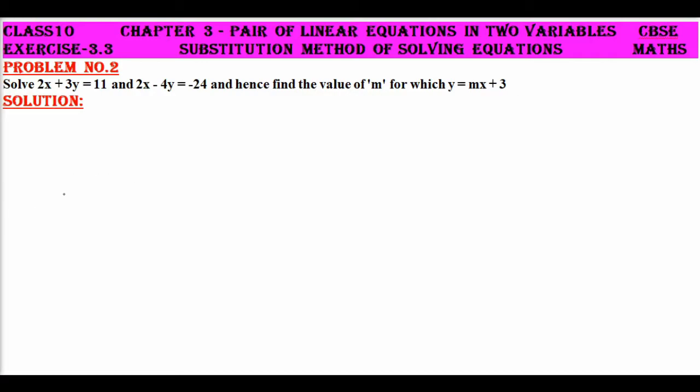Okay, in this problem, first of all, you are given two equations: 2x plus 3y equals 11 and 2x minus 4y equals minus 24. Right. Now here, let's mark these equations as equation 1 and 2. So here, the first part of the problem is to solve the given pair of equations.